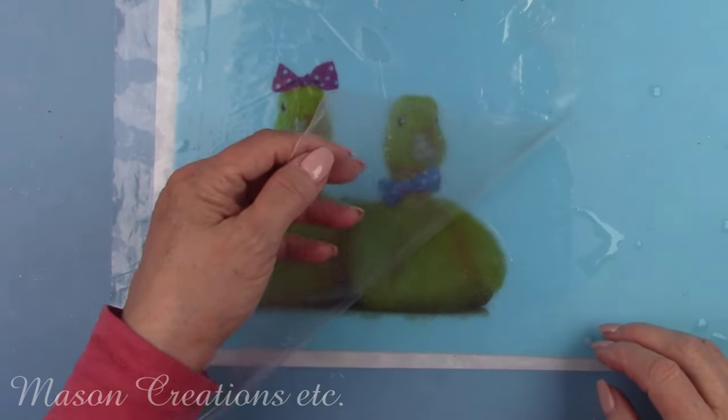I let the varnish dry for about an hour and now I'm using sandpaper to remove any varnish or paint that is on the very edge of the plate. I'm going around the whole plate making it nice and smooth and then wiping off the dust.